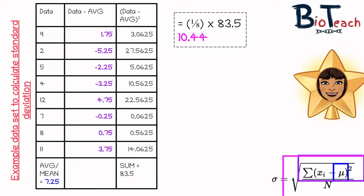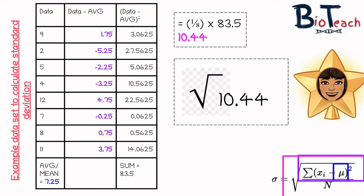So if I do 1 divided by 8 multiplied by 83.5, I get 10.44, and this is my figure for the variance. Then all I've got to do is work out the square root of my variance — the square root of 10.44 — which gives me a standard deviation of 3.23.